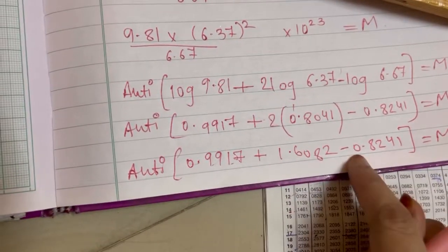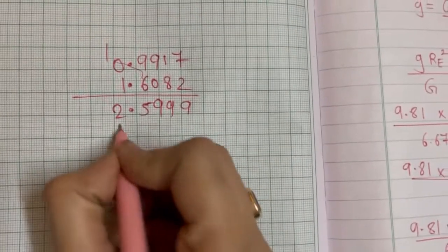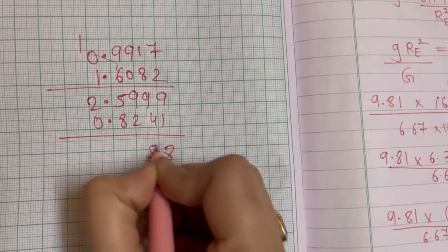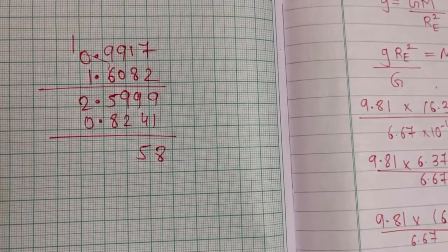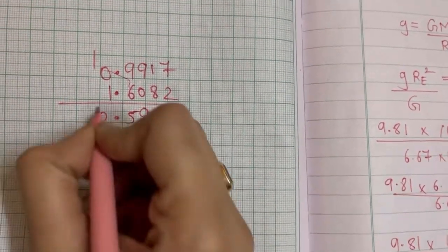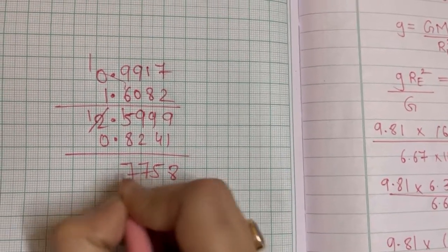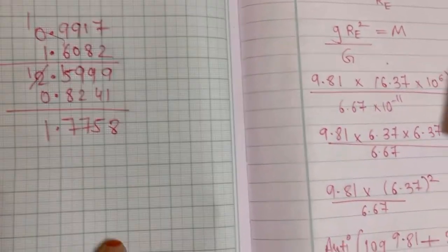Then we will subtract this digit, 0 point 8241, 0 point 8241, 9 minus 1, 8, 9 minus 4, 5, 9 minus 2, 7, 15, 15 minus 8, 7, 1 point 8, 7, 1 point 7, 5, 8.